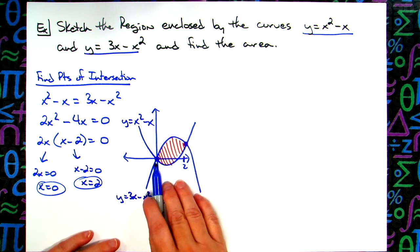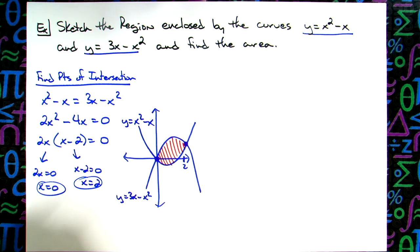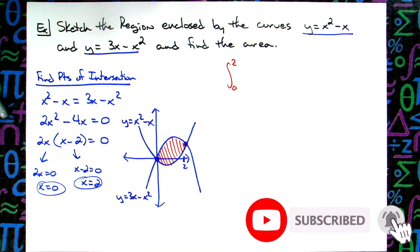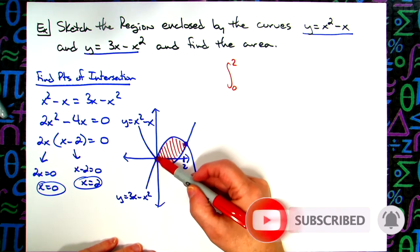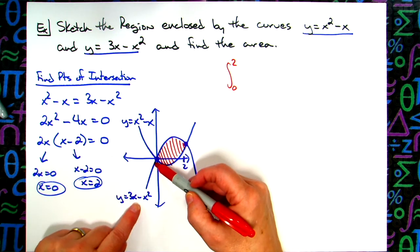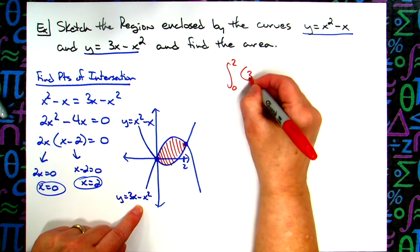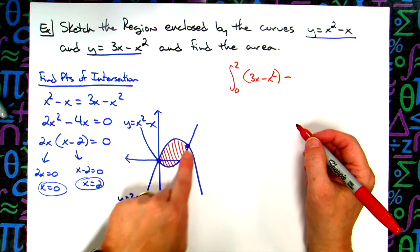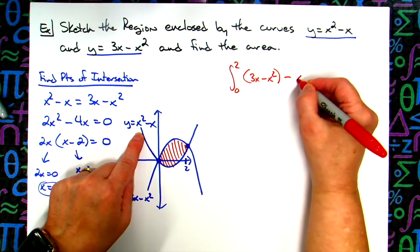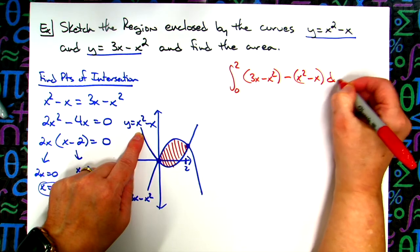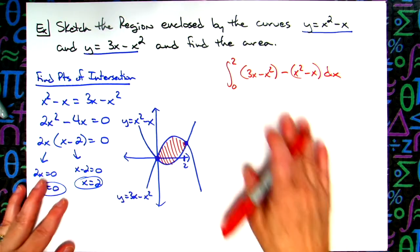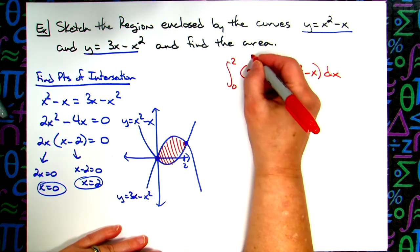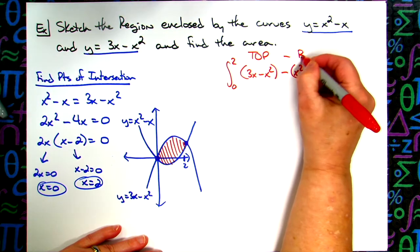So I will be integrating from 0 to 2. We'll go ahead and set up the integral from 0 to 2. And like I said we're going to want top curve minus bottom curve. Well my top curve is the 3x minus x squared. So we'll have 3x minus x squared minus the bottom curve. The bottom curve right in here is the x squared minus x. So setup there is very important on the integral. You have to be able to set up the integral in order to be able to work this out. So top curve minus bottom curve.